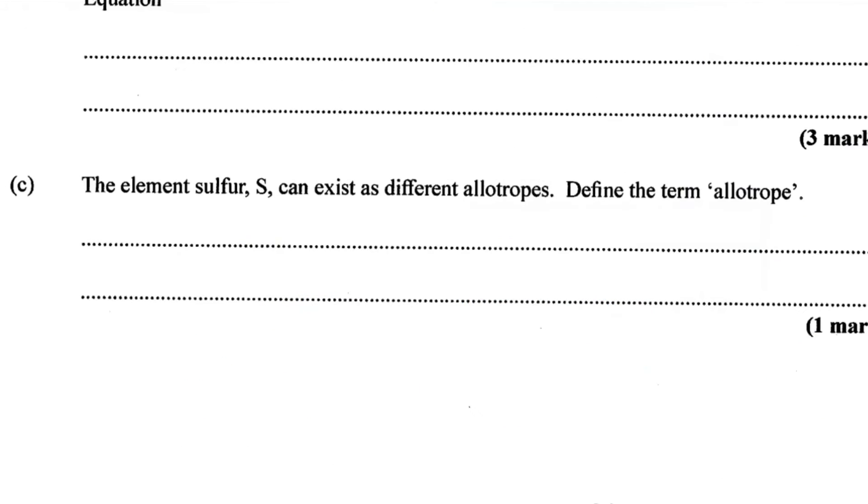Part C: The element sulfur can exist as different allotropes. Allotrope means an element existing in different forms. They will have different physical properties but same chemical properties.